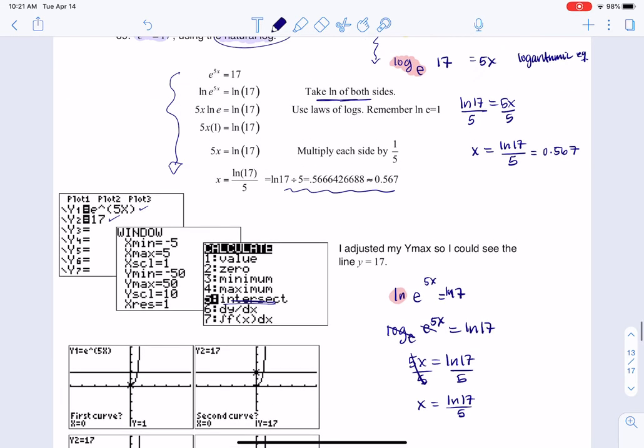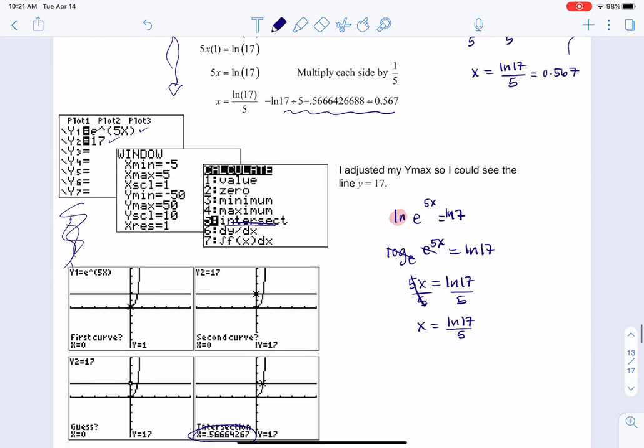Two algebraic ways. One was over here. One was over here. And then I've got technology. I was going to say calculator and calculation at the same time. So I've got technology giving me the third way. So either way, we get to that answer that the x value here is about 0.567.